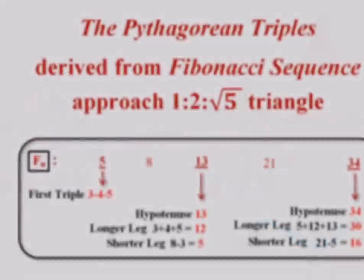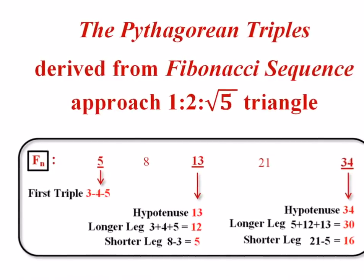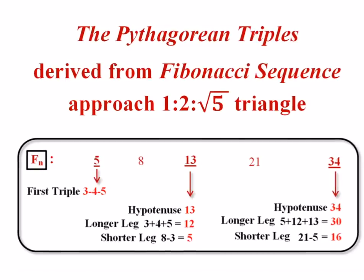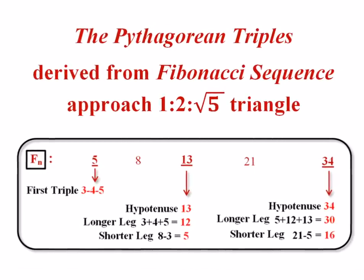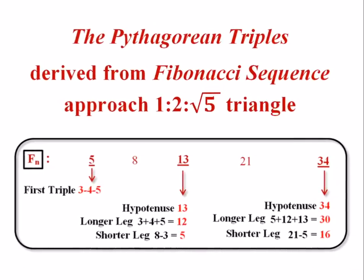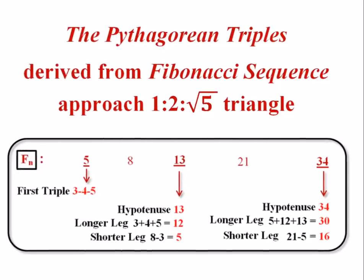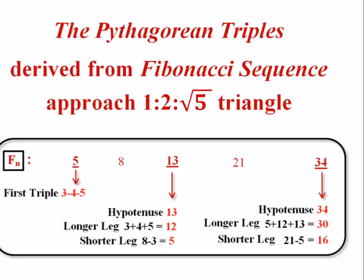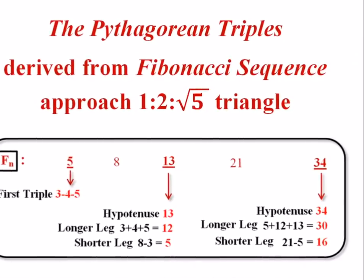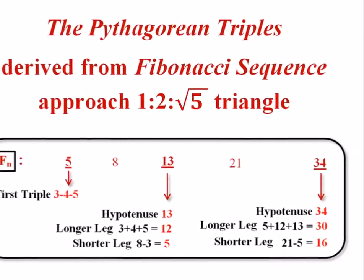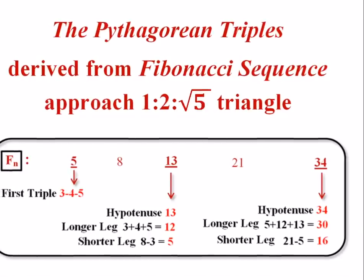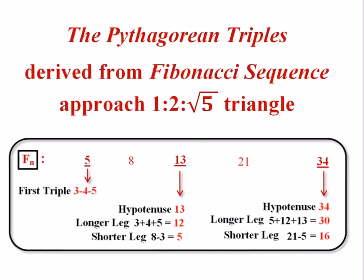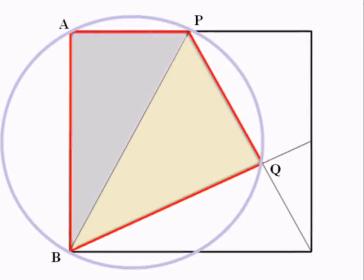Such a classical intimacy between these two right triangles can explain why the Pythagorean triples derived from the Fibonacci sequences approach the 1-2-root-5 triangle. Such series of Pythagorean triple begins with the 3-4-5 triangle. And this series, with alternate Fibonacci number as hypotenuse, approach to attain the side-length proportion of 1-2-root-5.